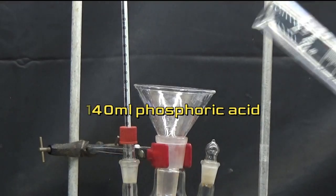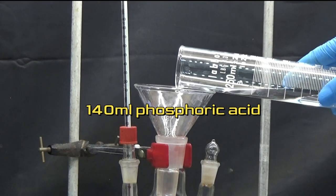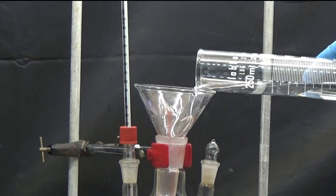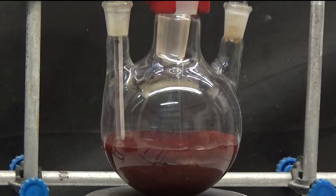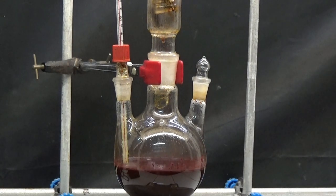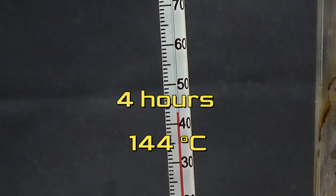Add 140 milliliters of phosphoric acid and fix the reflux condenser. 10 grams of potassium iodide. With moderate stirring, heat to 144 degrees during 4 hours.